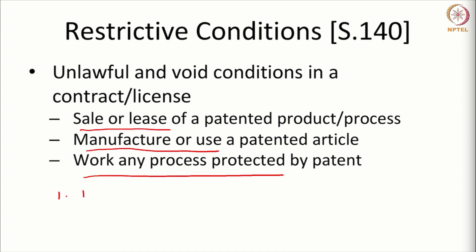The first is a tie-in, where a patented product is tied along with a non-patented product. There is a restrictive covenant saying that you have to acquire both the patented and the non-patented product from the same vendor. In effect, through a tie-in, the vendor who sells the patented product also ensures that non-patented products are tied along with it. This is a restrictive condition which will be treated as void.